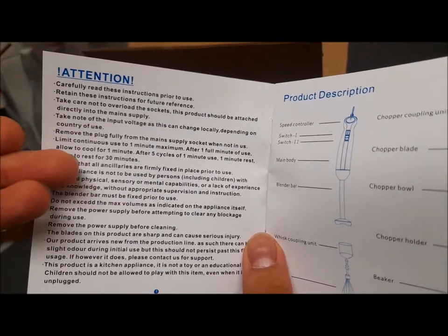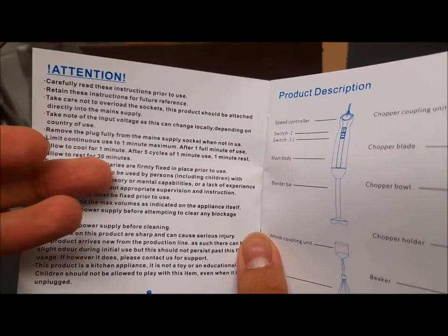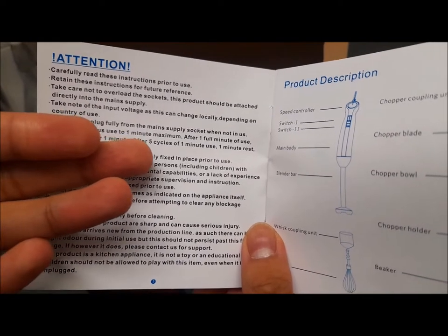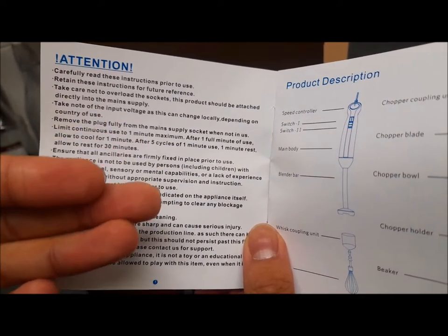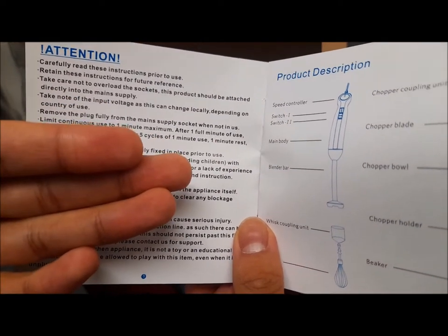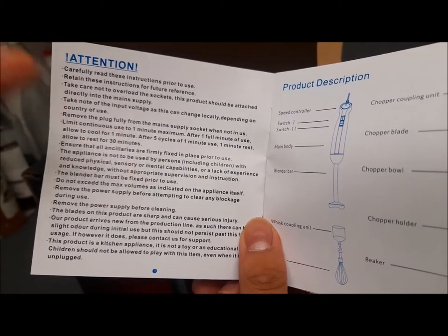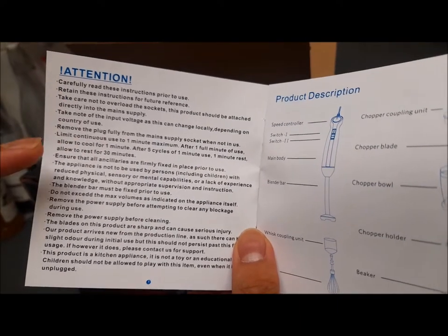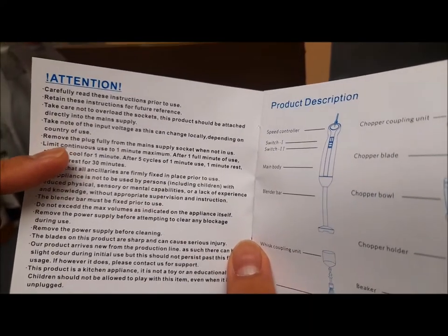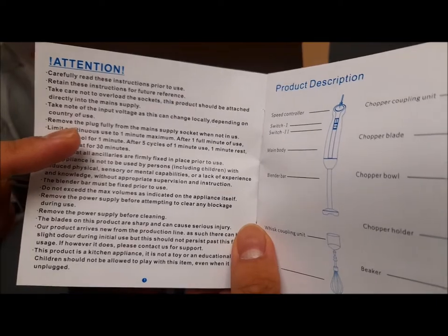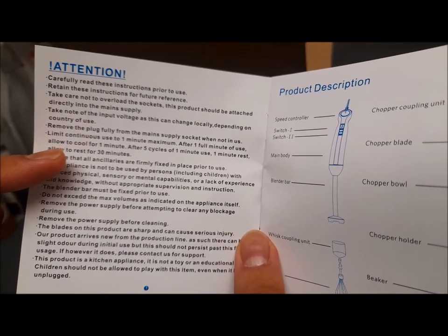So basically you're supposed to only use the blender for a continuous cycle up to a maximum of 60 seconds. After 60 seconds, you should allow it to cool for another 60 seconds. After five cycles of one minute use, you're supposed to allow it to rest for 30 minutes. I have never come across a blender machine that says you have to use it for one minute maximum.